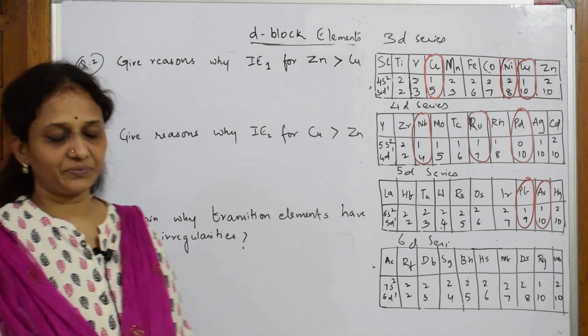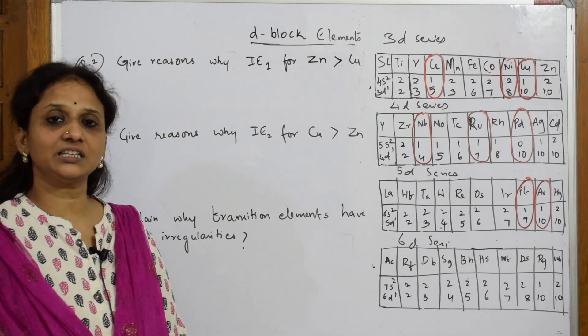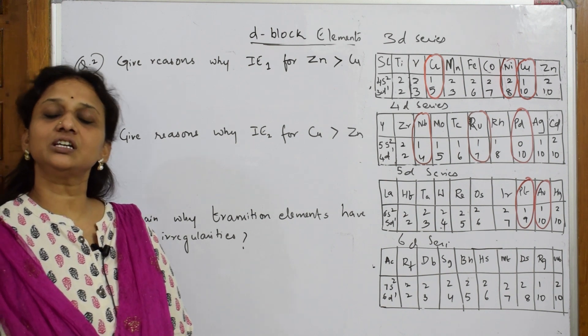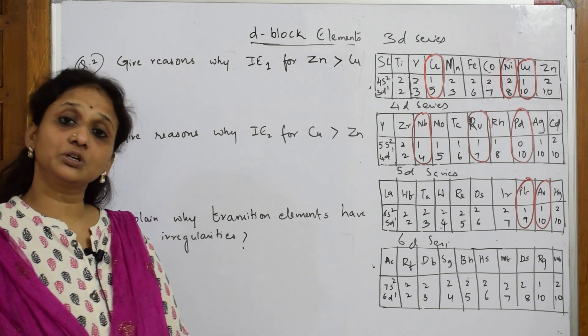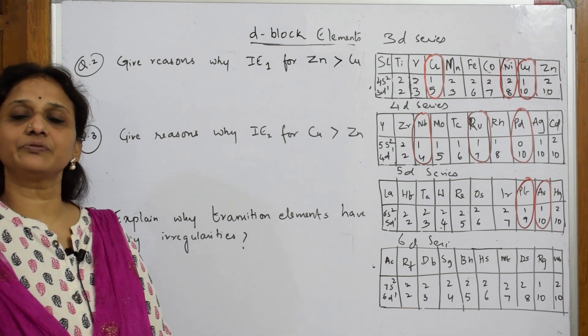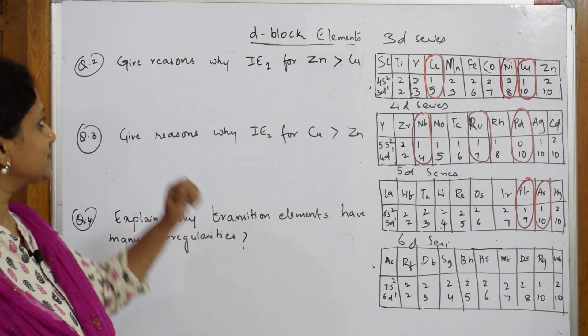Now they've asked me to relate ionization enthalpy and electronic configuration. What is ionization enthalpy? The amount of energy required to remove an electron from the outer shell. That means you're going to remove an electron in this assumption, and they're asking us to give the reason.